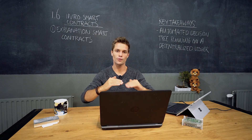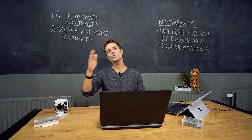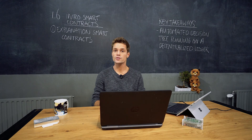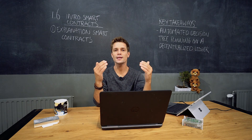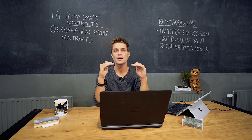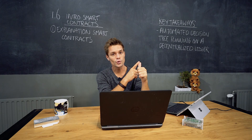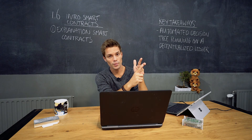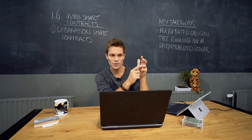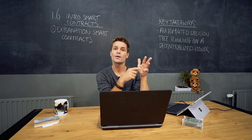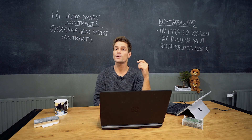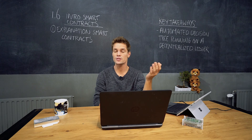By combining these decision trees — if this happens then that — and combining smart contracts one, two, three, four, five, six, seven into one huge decision tree, you can create your own application. Because it runs on a decentralized, distributed, open public blockchain, you have a decentralized application where you own your data. It's self-sovereign, immutable, and censorship-resistant — the same application as before, only with way better properties, cutting out the intermediary and replacing them with an automated protocol.